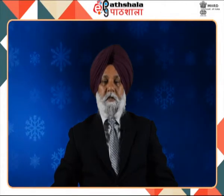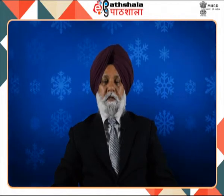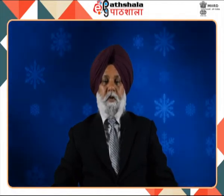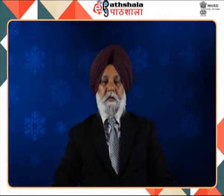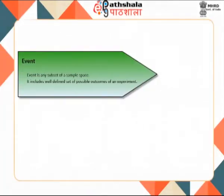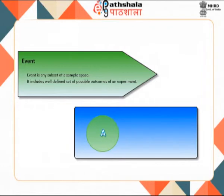Conventionally, events are denoted by uppercase letters like A, B, C without any suffix or superfix. We would say that event A has occurred if the outcome of the experiment is one of the elements in A. In a figure, the rectangle represents all the possible outcomes of a non-deterministic experiment — in other words, it is the sample space. The circle labelled A consists of all the possible outcomes under event A; it is a subset of the sample space.